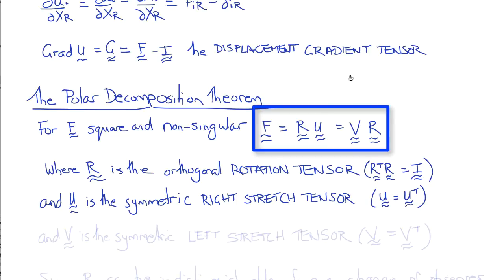In the alternative form of the polar decomposition theorem, V, which is also symmetric, it's called the left stretch tensor. So V equals V transpose.